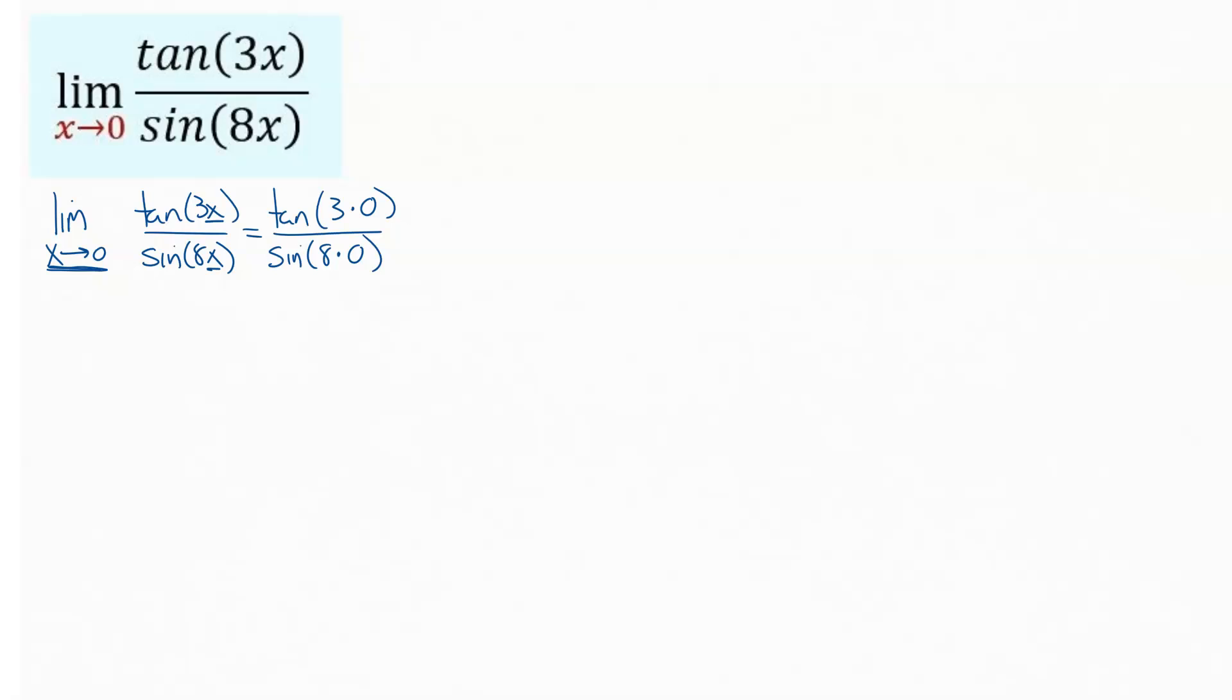So we would get the tangent of 3 times 0 over the sine of 8 times 0 when we plug it in. The tangent of 0 gets us 0 on top. More importantly though, the sine of 0 on the bottom is 0. So division by 0 is the biggest no-no in all of math. We are not allowed to do that. So that is bad, and basically option 1 failed us.